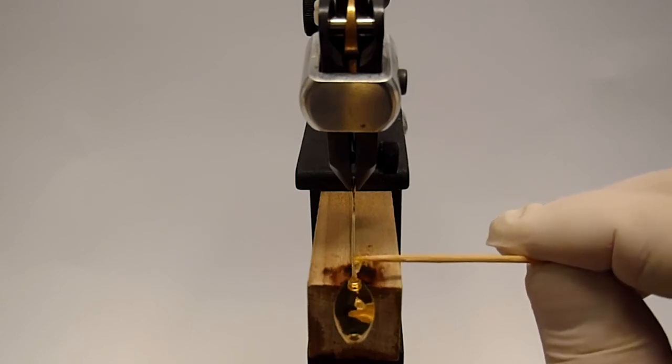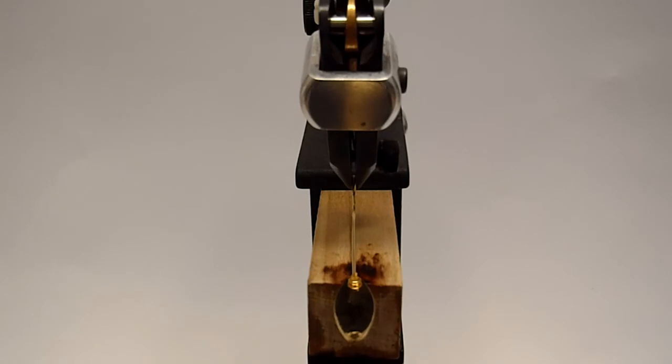If you put too much flux on, it overflows. It will go over the lip of the blade and onto the wood and the back side of the blade. And it's really just kind of an ugly mess.